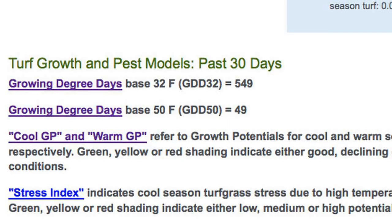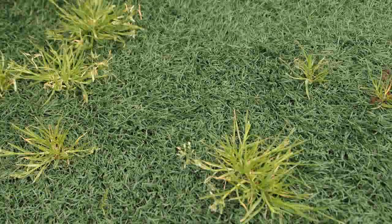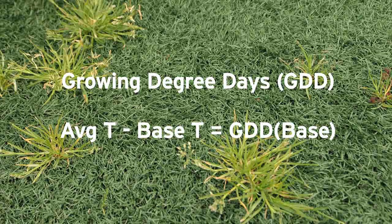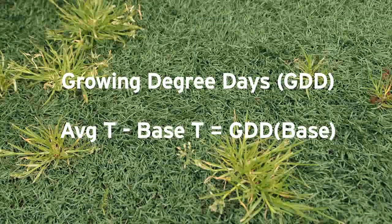Let me take a minute to review the concept of growing degree days and how they are used. Growing degree days are frequently used to predict plant and insect development. This simple method uses the average daily temperature and a base temperature that is characteristic for the plant or insect in question. Each degree of average temperature that exceeds the base temperature adds one degree day.